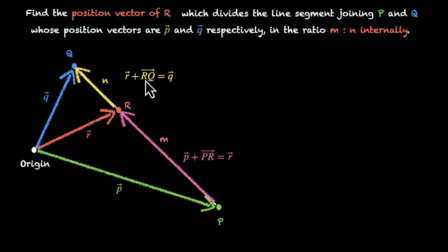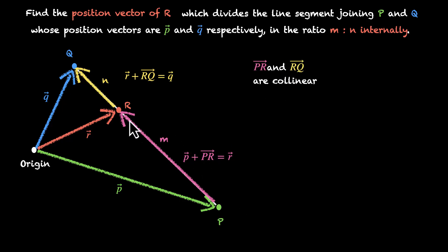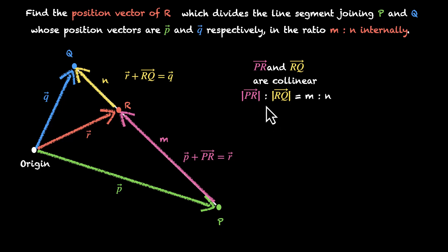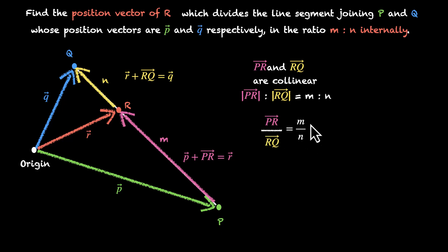Why are we finding rq vector and pr vector? Because these two vectors are related. First, they are collinear, since p, q and r are on the same line — so pr vector and rq vector are collinear, meaning one is a scaled version of the other. We also know the ratio of their magnitudes: mod of pr vector to mod of rq vector is given as m is to n. So we can write pr vector divided by rq vector equals m by n.